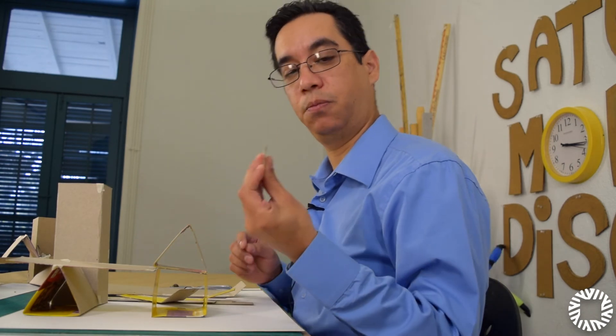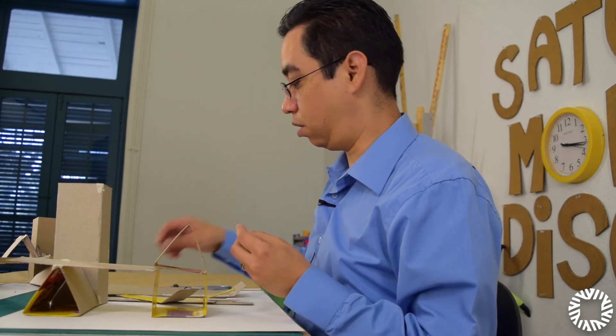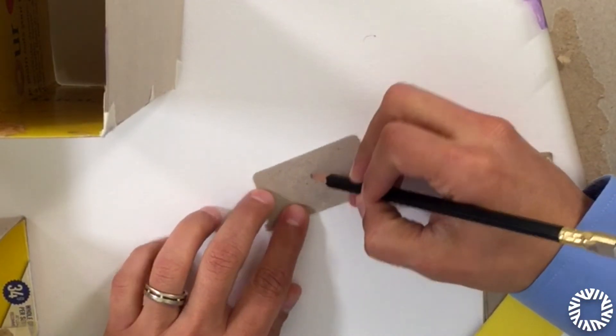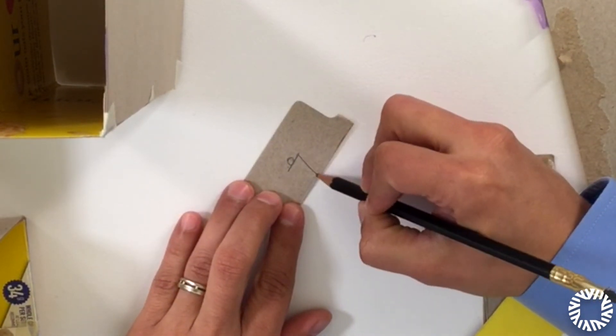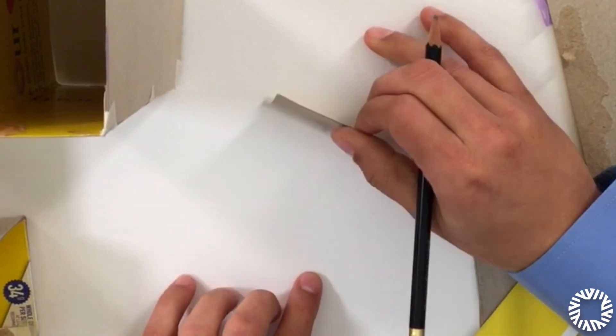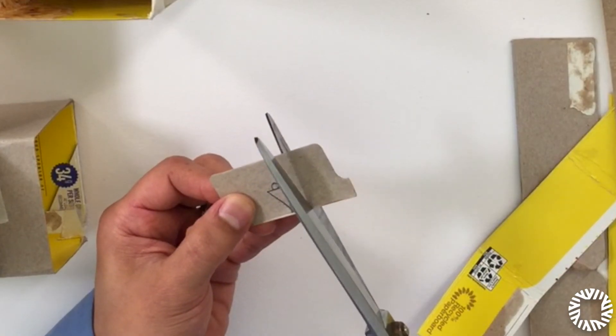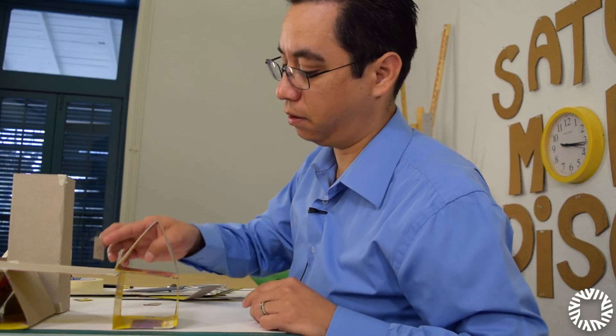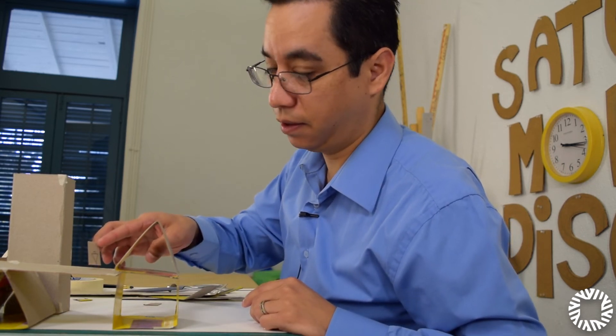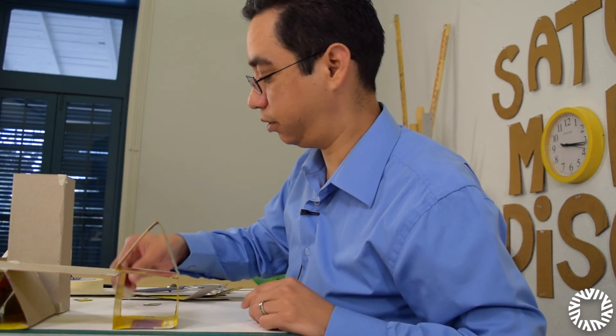I use these smaller pieces to draw on. All I do is take a pencil and I do a little circle, triangle, and that's a person. You take your scissors, cut that out, take a little bit of tape, and now you have your environment. And you can tell, the bigger you make the person, the bigger the model changes.